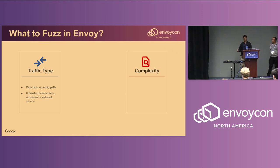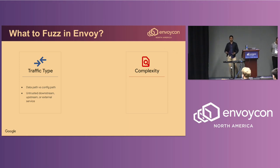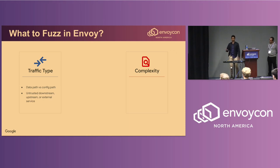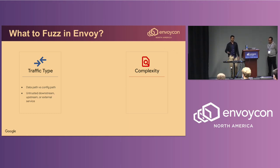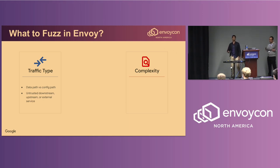If your library is on the data path, it's worth further breaking down the trust level by your connection. For example, if Envoy is deployed as a gateway you may have untrusted downstream clients, or in a multi-tenant model you may have untrusted upstream clients. You also need to consider whether you trust interactions with any external services. It's really important to focus on fuzzing inputs from untrusted actors trying to break your deployment.